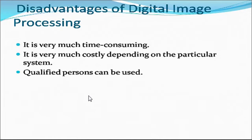There are some disadvantages of digital image processing. It is very time-consuming and can be very costly depending on the particular application. There are also different phases of image processing, including image restoration, color image processing, wavelength and multi-resolution processing, image compression, segmentation, representation, and description.